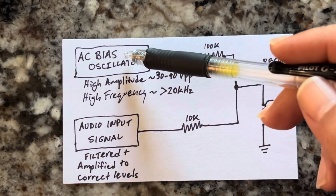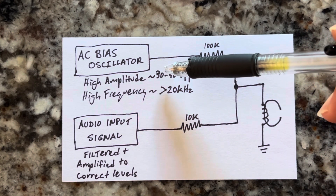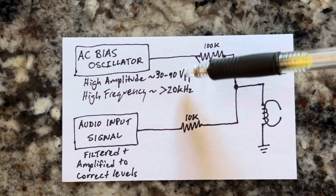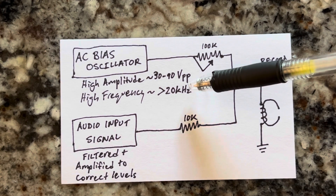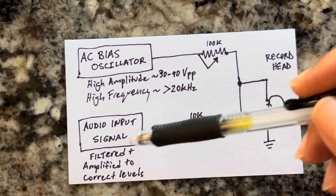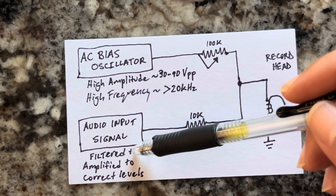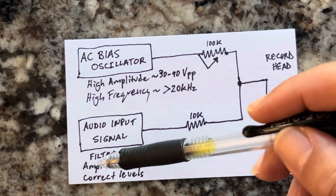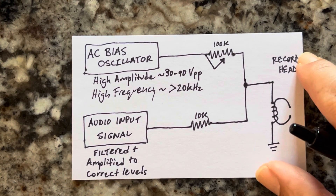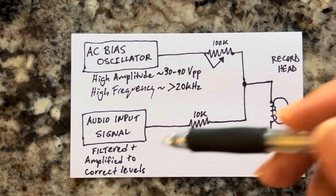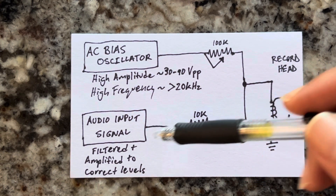You have to have an AC bias oscillator, and that oscillator has to be at high amplitude — about 30 to 90 volts peak to peak — and at a very high frequency, greater than 20 kilohertz. Then you take your audio input signal, which you want to equalize, filter, and amplify to correct levels so it's not too loud — if it's too loud, it gets distorted. Low frequencies get amplified more easily, so you want to limit those by putting the signal through some kind of high-pass filter.